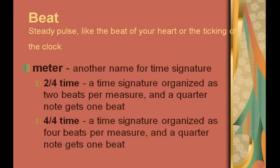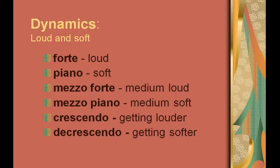Beat is a steady pulse like the beat of your heart or the ticking of a clock. Meter is another name for a time signature. 2/4 time is organized as two beats per measure and a quarter note gets one beat. 4/4 time is organized as four beats per measure and a quarter note gets one beat.